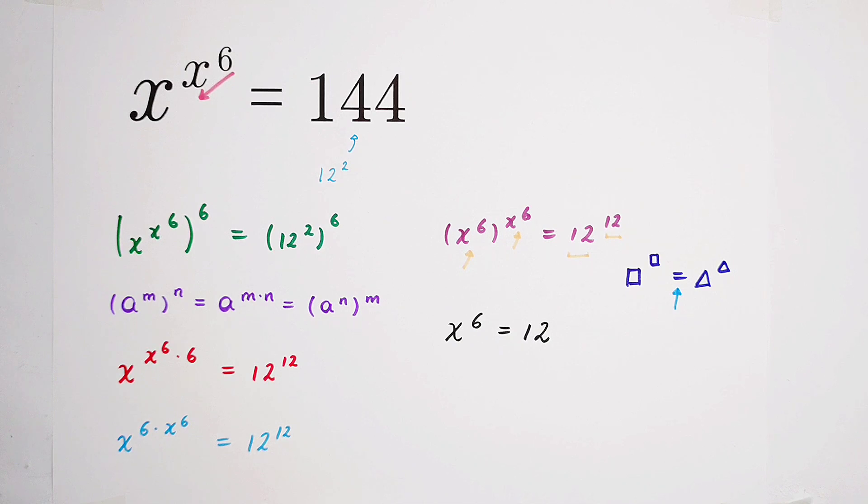How many real solutions do we get? 1? Sorry, you got it wrong. 2, correct. Plus or minus, positive or negative, because 6 is an even number. The sixth root of 12.